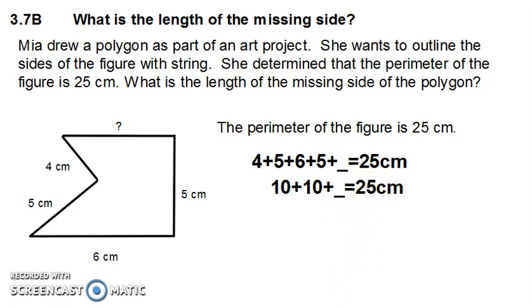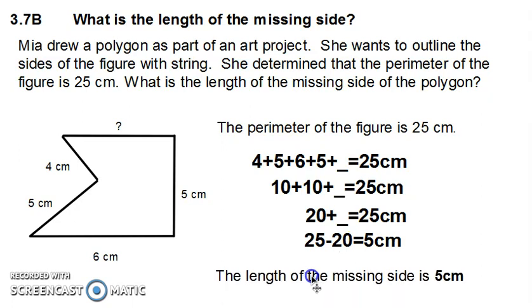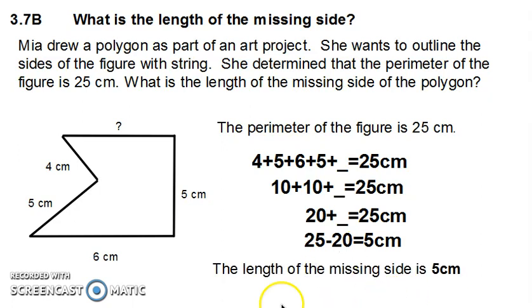To simplify even further, I will add the 10 plus 10, which is 20, plus the unknown equals 25 centimeters. Now that I know the total of the given sides, I will subtract it from the perimeter and the length of the missing side is 5 centimeters.